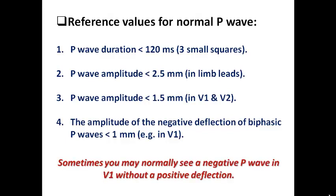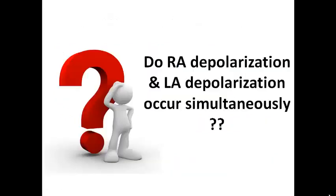Sometimes you may normally see a negative P wave in V1 without a positive deflection. This is considered a normal variant and should not be considered abnormal.